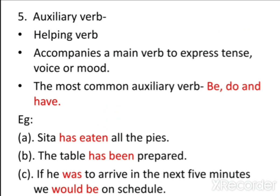Auxiliary verb: an auxiliary verb adds functional or grammatical meaning to the clause in which it appears, such as to express tense, aspect, voice, or emphasis. The principal auxiliary verbs are be, do, and have. For example, 'Sita has eaten all the pies' — 'has' is expressing tense. 'The table has been prepared' — 'has been' helps to express passive voice. In a third sentence, 'was' and 'would' are expressing mood.